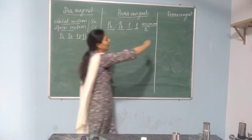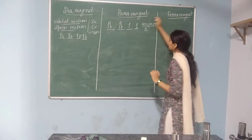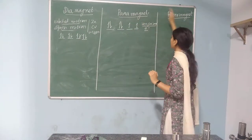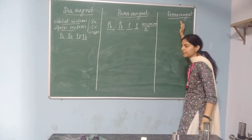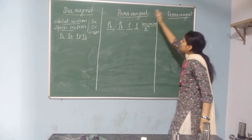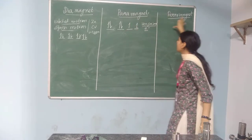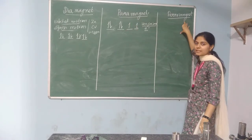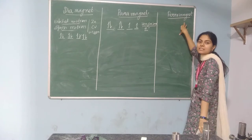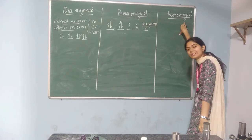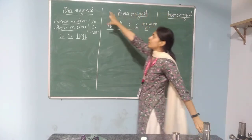In the ferromagnetic case, the same situation appears as in paramagnetic — they are also having unpaired electrons, but in greater number. That is why ferromagnetic materials are strongly attracted to the magnetic field.